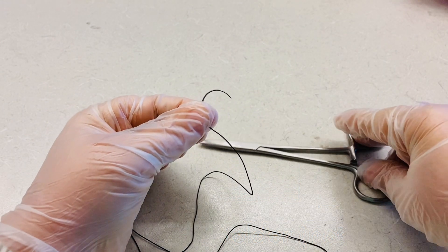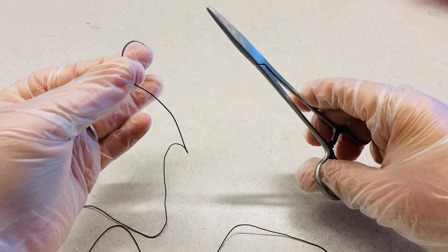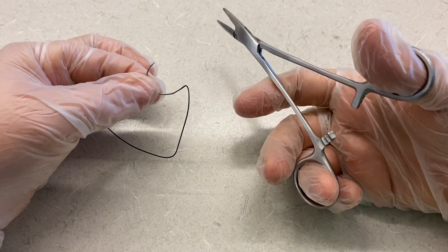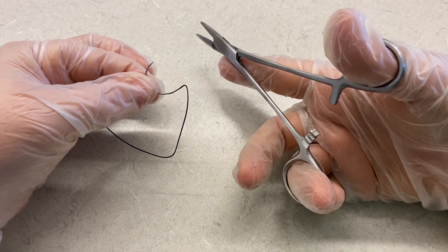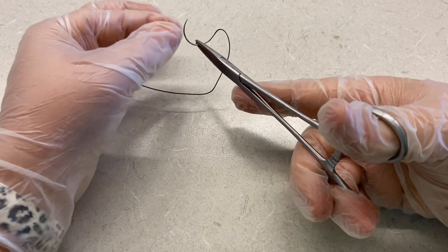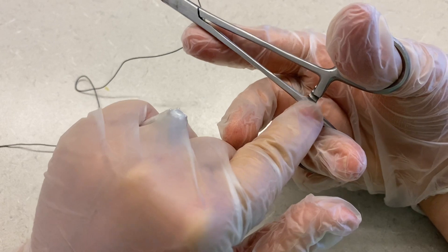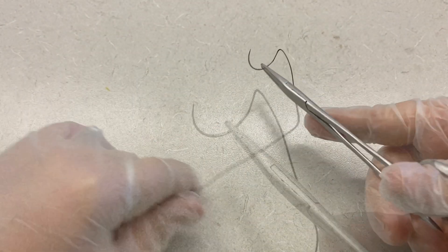Now that you have the needle holder correctly in your hand, let's practice using it to grasp the needle. With the needle holder properly in your hand, you're going to grab the needle itself about a third down, and when you grab it, you're going to lock the needle holder in place. So your needle holder and needle should look something like this.